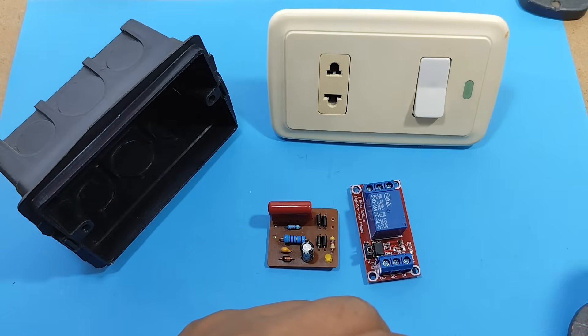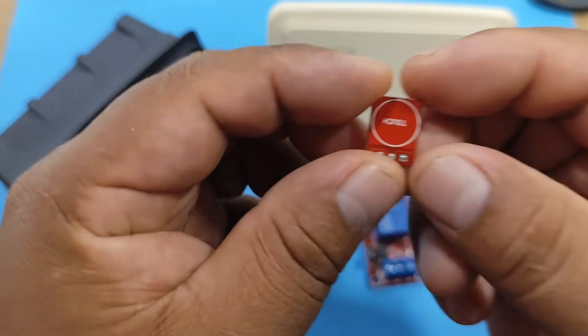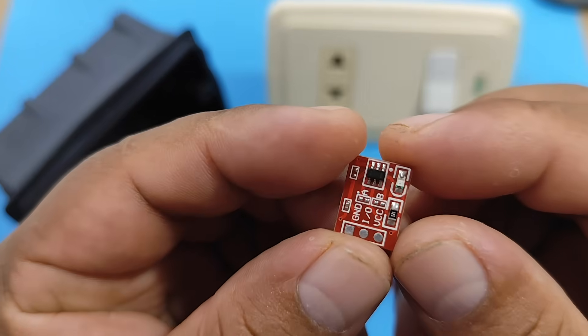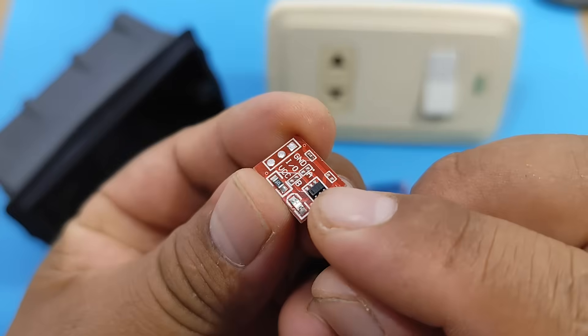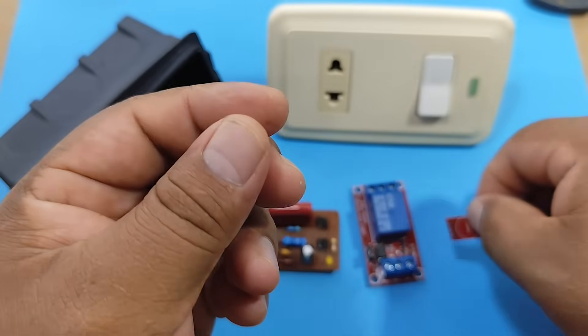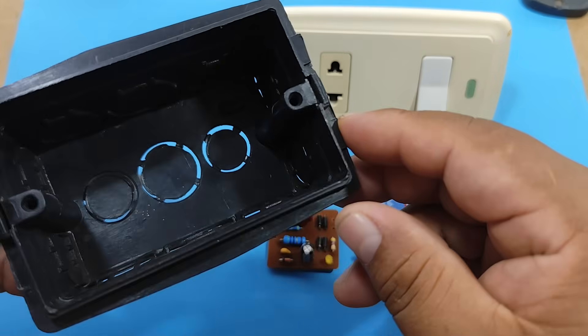Then, to replace the switch, we're going to use the touch sensor based on the TTP223. All of this will have to go inside this enclosure.